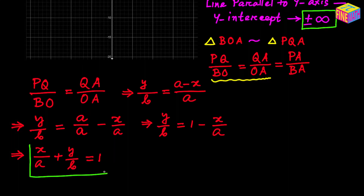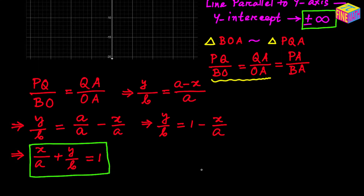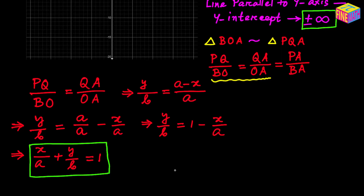This is the equation of our straight line in the intercept form. We call it the intercept form because the equation is expressed in terms of only the two variables x and y, along with the x-intercept lowercase a and the y-intercept lowercase b. Because the equation is expressed in terms of the intercepts of the straight line, it is called the equation of a straight line in the intercept form.